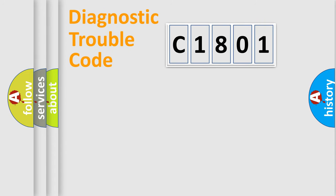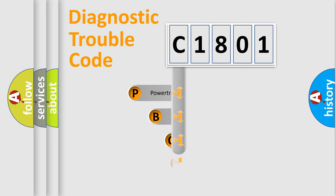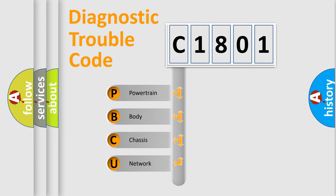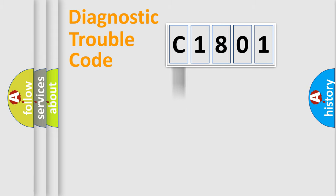First, let's look at the history of diagnostic fault code composition according to the OBD2 protocol, which is unified for all automakers since 2000. We divide the electric system of the automobile into four basic units: Powertrain, Body, Chassis, and Network. This distribution is defined in the first character of the code.